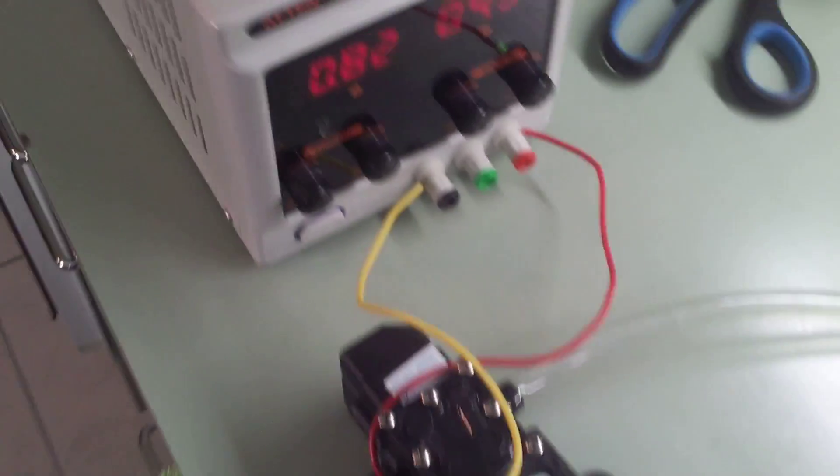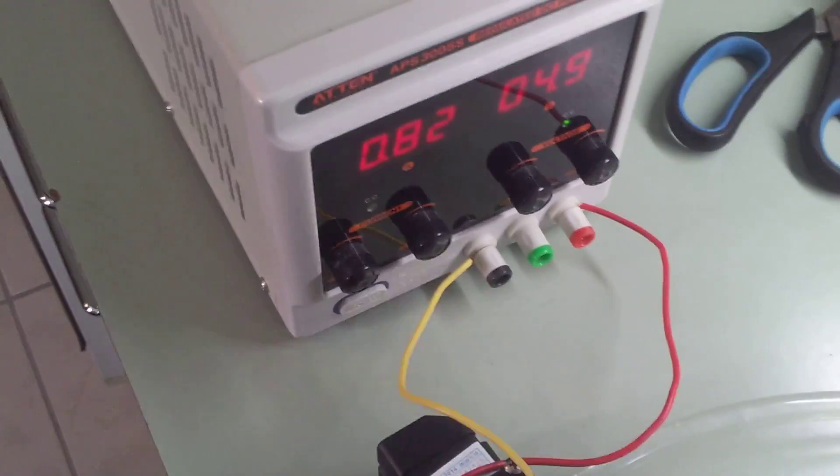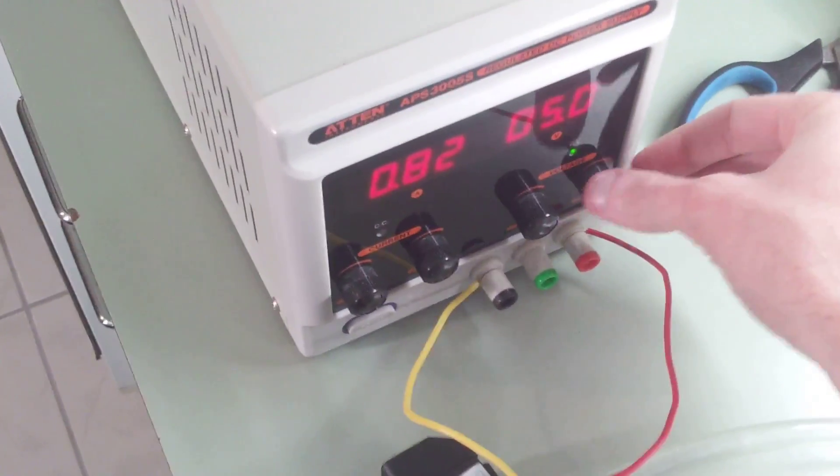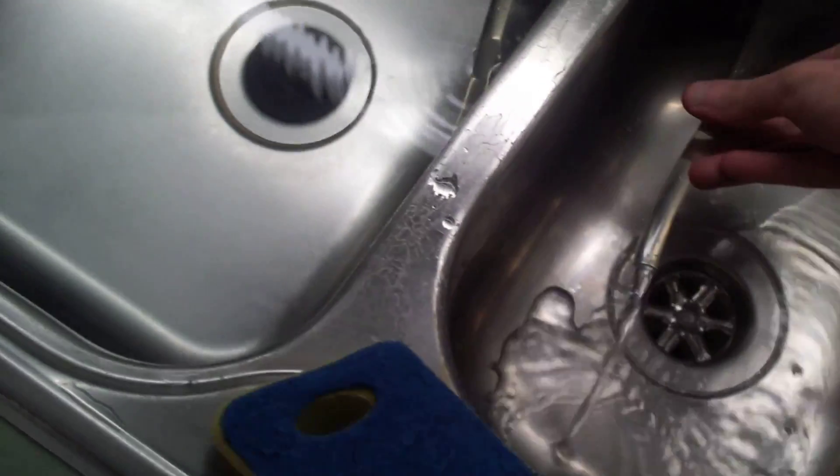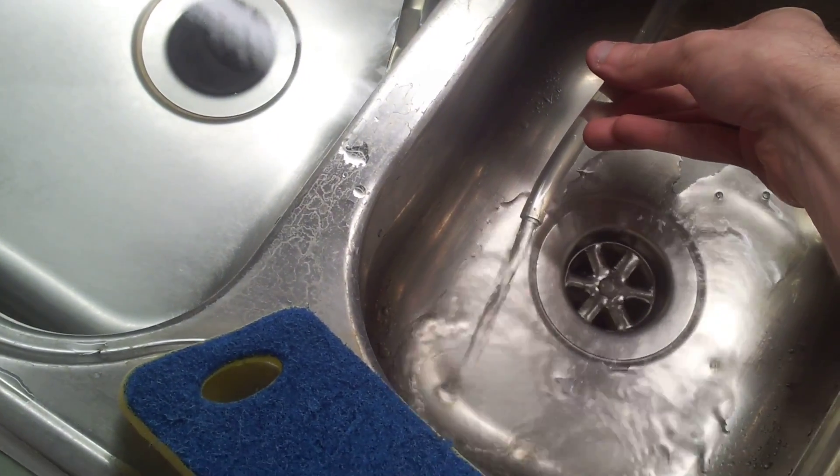Now this is actually only running at 4.9 volts or let's just say 5 volts and it uses less than 5 watts. But it's actually a pretty good flow rate considering I've got about 2.5 meters of tubing attached to it.